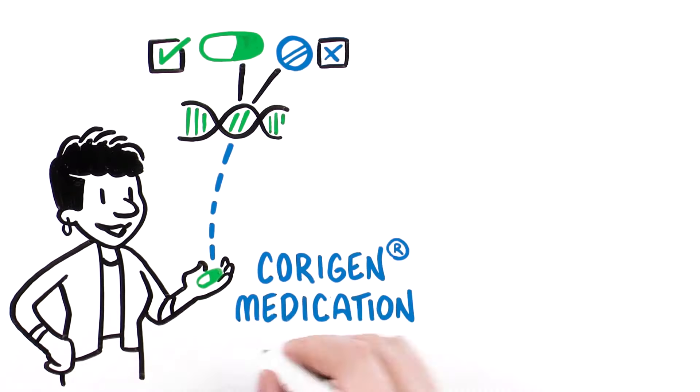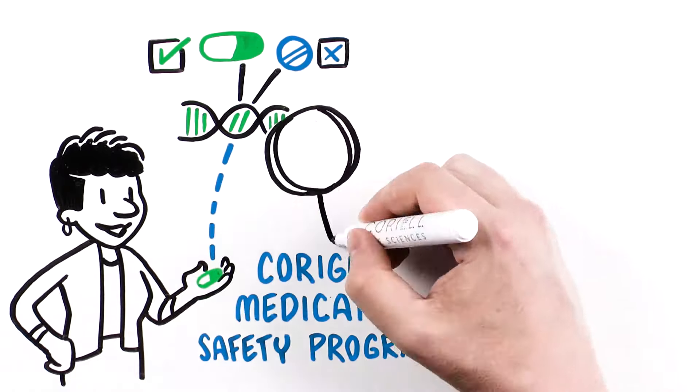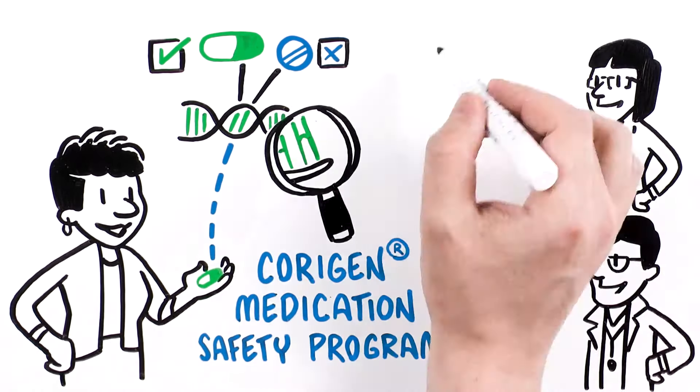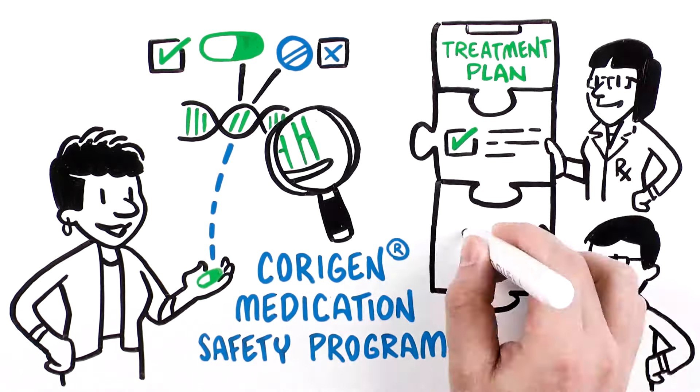The Coriigen Medication Safety Program, which uses DNA testing, can help pharmacists and providers personalize treatment plans for each person.